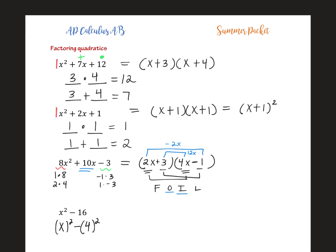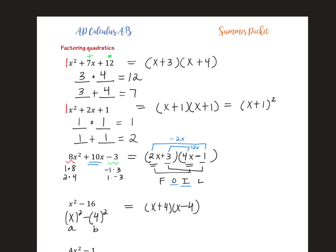In such situations, when you realize this is a difference of squares, this will factor into x plus 4 and then x minus 4. Or in other words, if this is a and this is b, it will always factor into a plus b times a minus b.